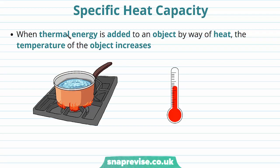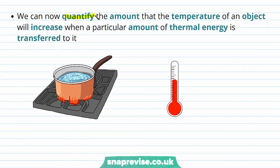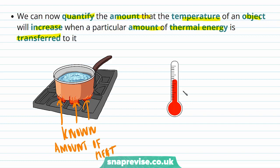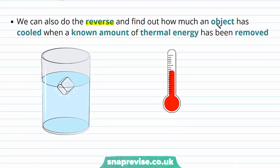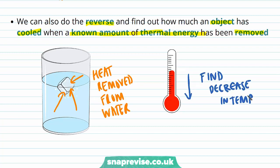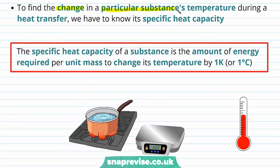First we're going to define what specific heat capacity is. When thermal energy is added to an object by way of heat, the temperature of an object increases. So as we add heat to this water, its temperature is going to increase. We want to quantify the amount that the temperature of an object will increase when a particular amount of thermal energy is transferred to it. We can also do the reverse and find out how much an object has cooled when a known amount of thermal energy has been removed. In order to find the change in a particular substance's temperature during heat transfer, we have to know its specific heat capacity.